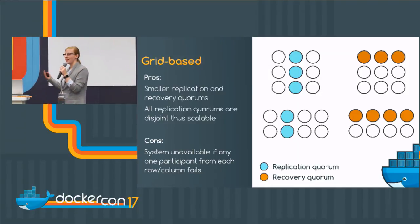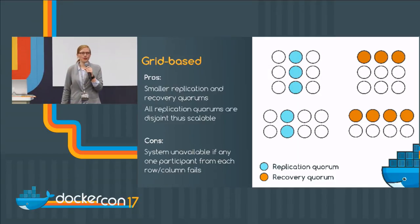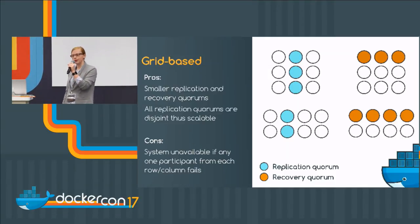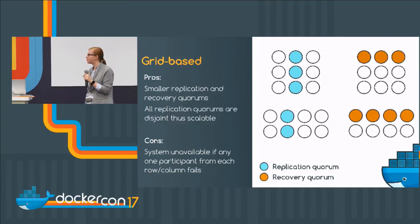Here we have nine nodes but we're only ever using three of them. This allows us to get a much higher throughput as the system is now beginning to truly scale.